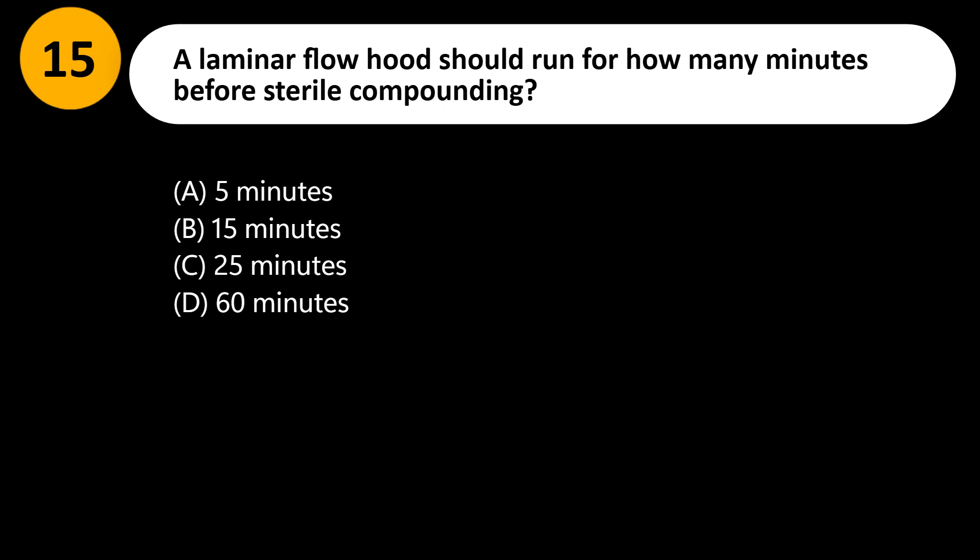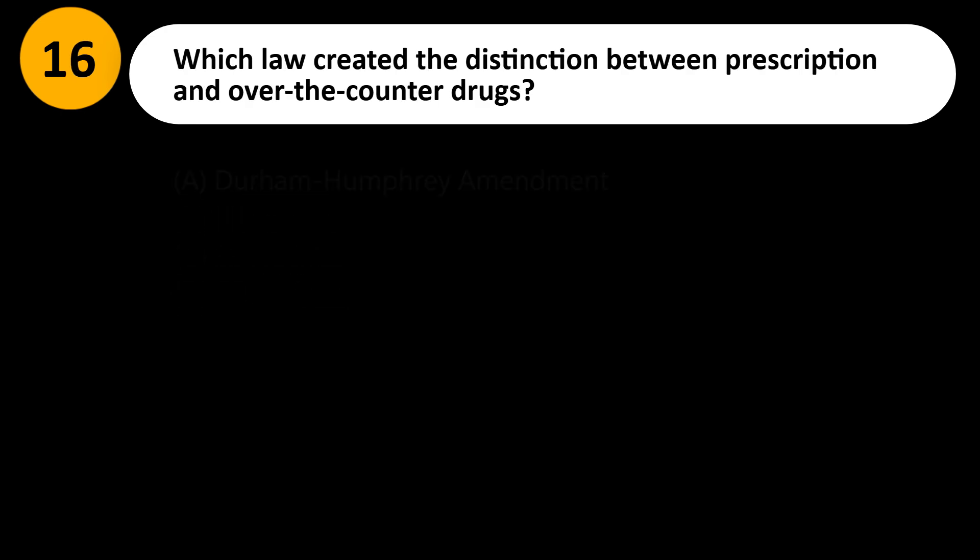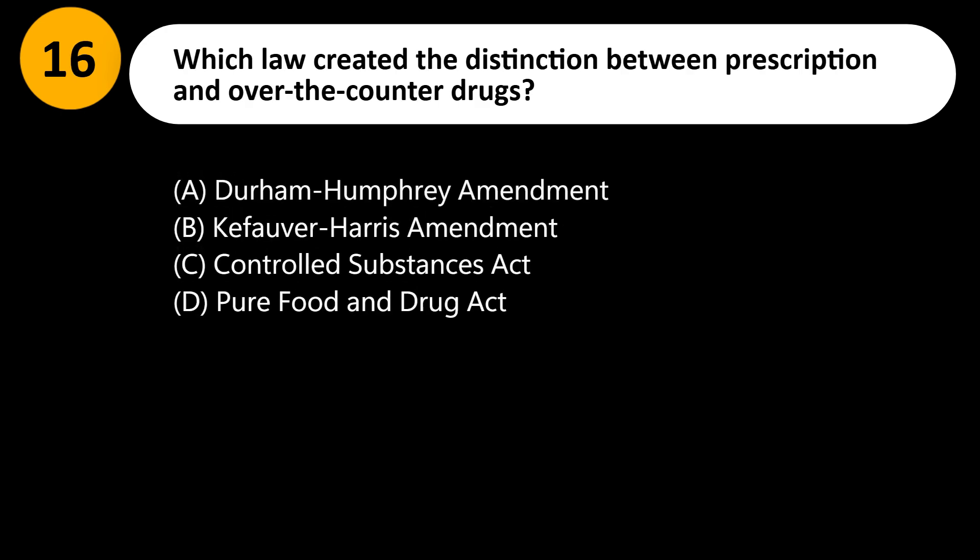A laminar flow hood should run for how many minutes before sterile compounding? A) 5 minutes, B) 15 minutes, C) 25 minutes, D) 60 minutes. Answer: B. A laminar flow hood must run at least 15 minutes before compounding to purge contaminants.